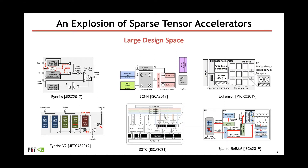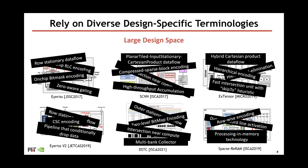Here we show some example designs from recent years. At a high level, these sparse tensor accelerators aim to exploit the sparsity in the workload to improve overall hardware efficiency. However, we observe that these proposals often depend on diverse design-specific terminologies. As a result, it is really hard for general architects to understand the meanings behind these terminologies, not even mentioning the interactions between the complex design decisions.